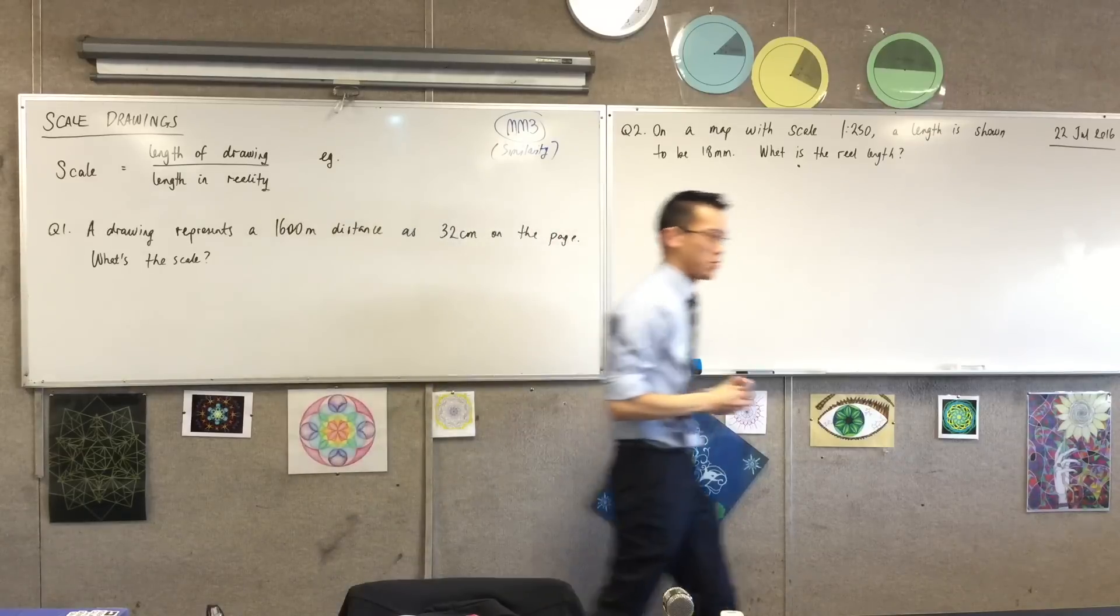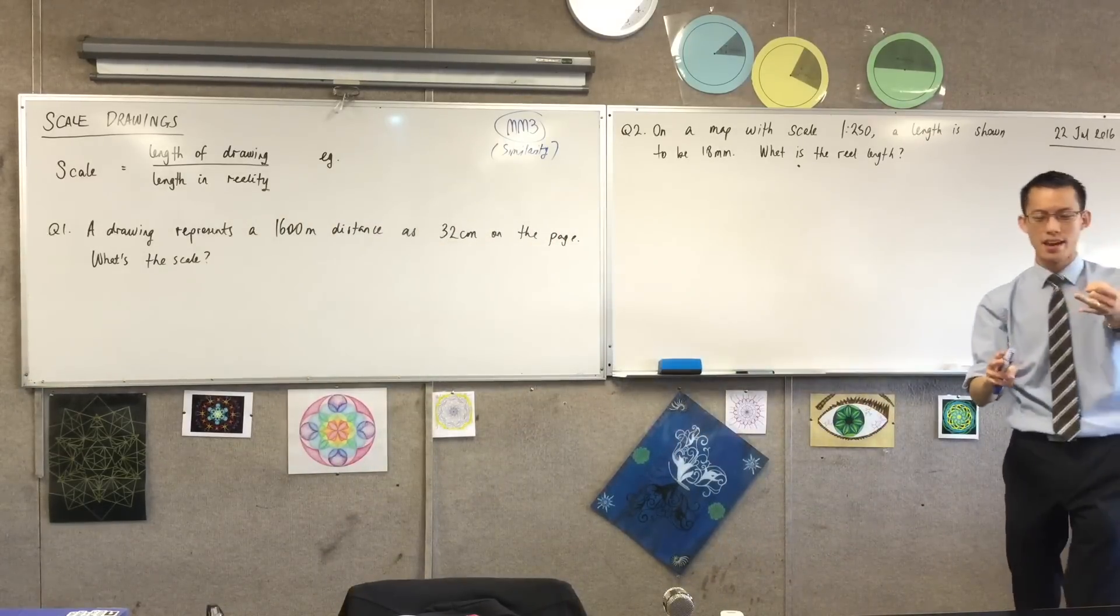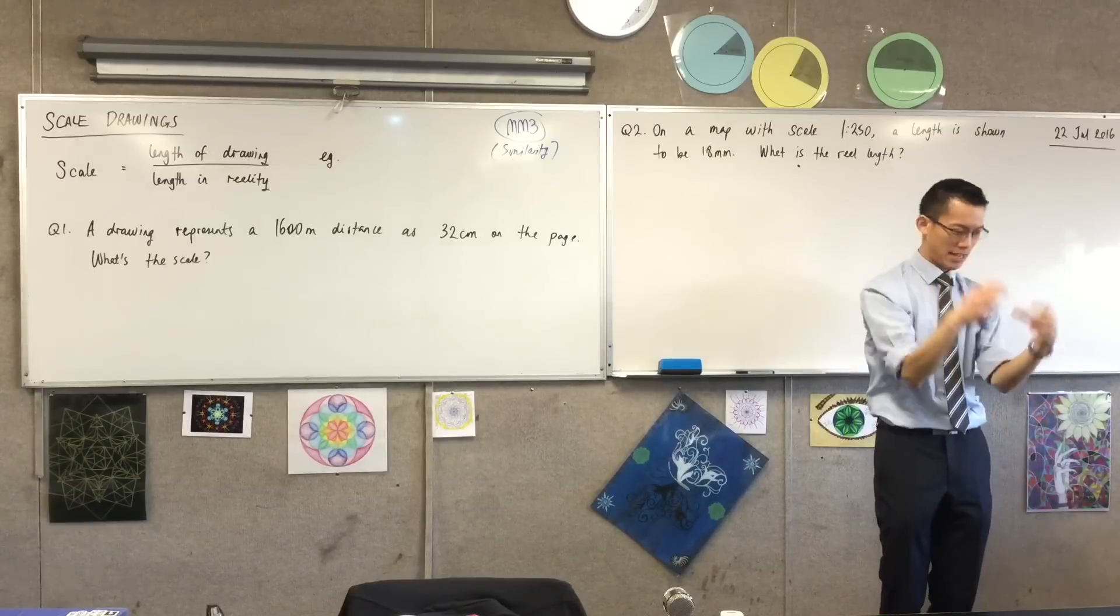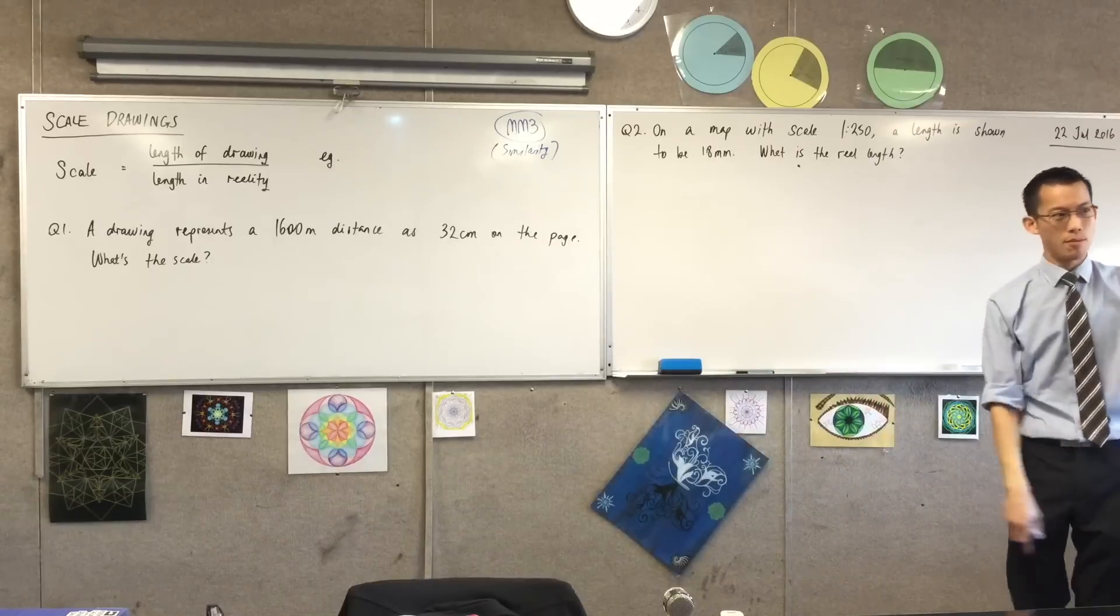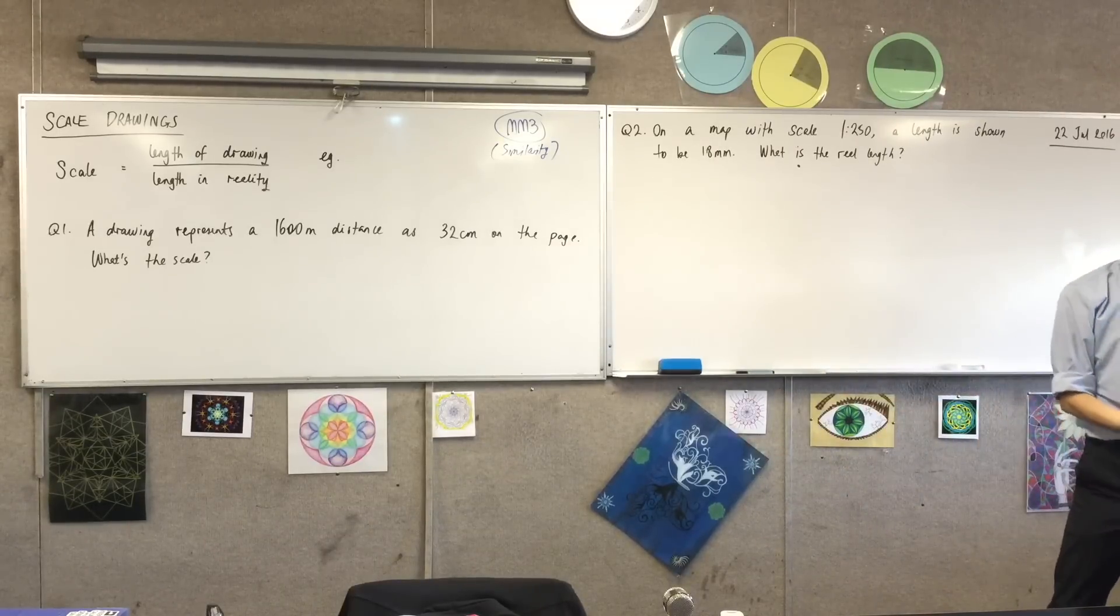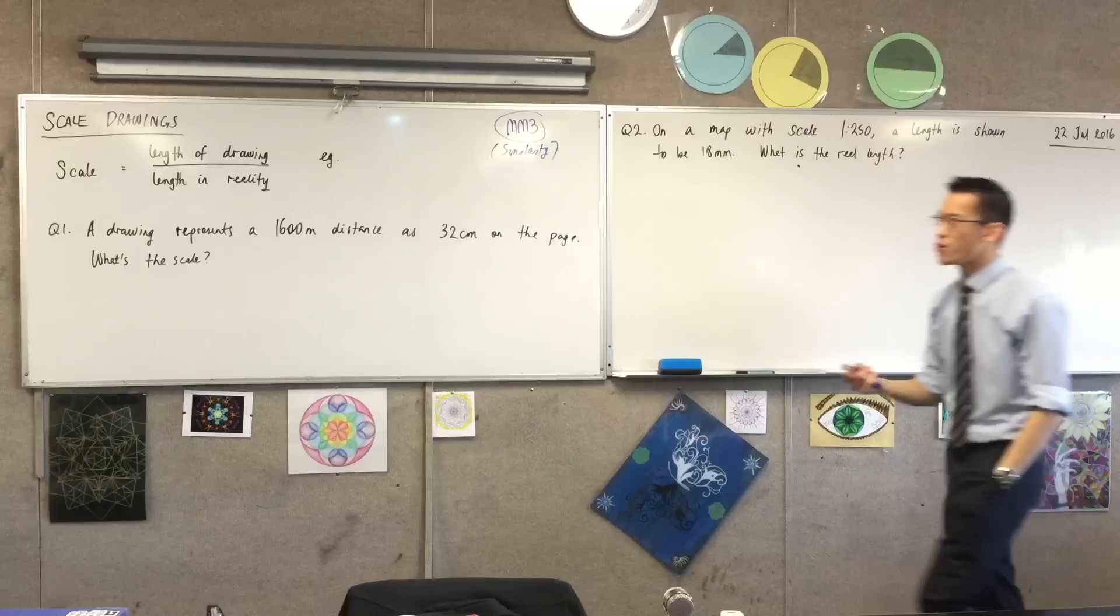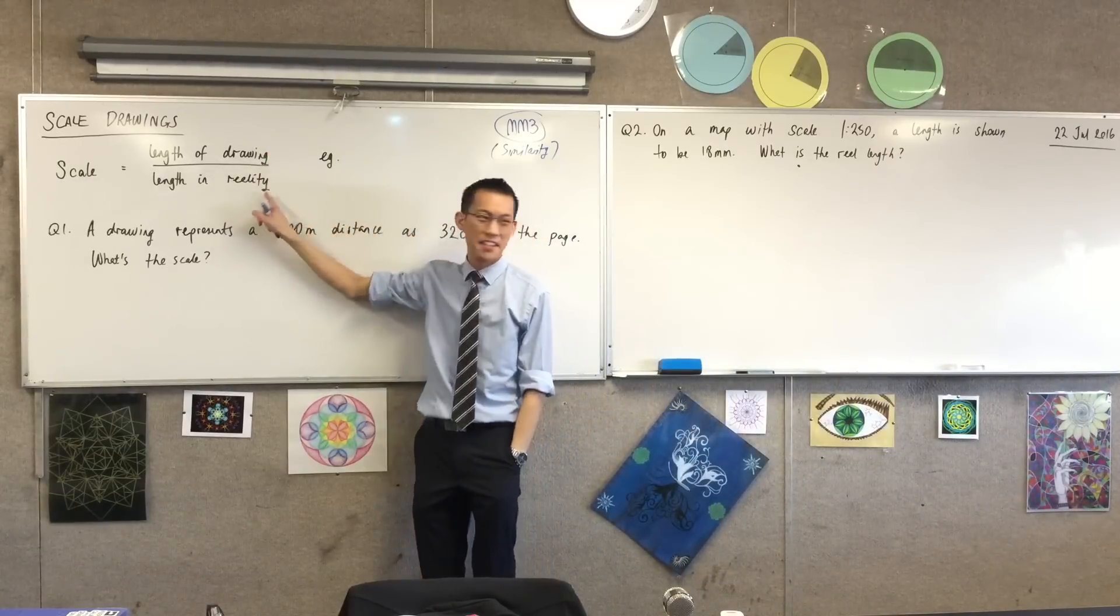And similar shapes, remember? They're shapes that are exactly the same in terms of their features and their proportions, but they're just different size. Like really small things that look the same as really big things. And one of the most common places where we find similar things in real life are scale drawings, like maps and that kind of thing, where you've got a drawing that you clearly want to be smaller than the real thing.